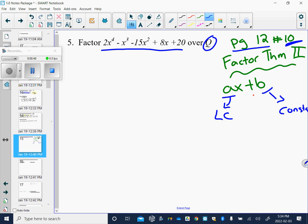So let's look at our leading coefficient, 2. The factors of 2 over the rational numbers are plus or minus 1 and plus or minus 2. Factors of 20 over the rational numbers are plus or minus 1, plus or minus 2, 4, 5, plus or minus 10, and plus or minus 20.